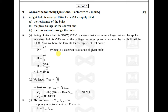Example number one: a light bulb is rated at 100 watt for a 220 volt supply. We need to find the resistance of the bulb. Using P = V² / R, with V = 220 volts and P = 100 watt, we get the resistance value equal to 484 ohms.